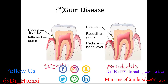Periodontitis — 'peri' meaning around the tooth and 'itis' meaning inflammation — is inflammation of the periodontium, the tissue supporting the tooth. The key distinction between periodontitis and gingivitis is that periodontitis involves bone loss, whereas gingivitis does not. Periodontitis is an irreversible process because bone is very difficult to reform without a graft.